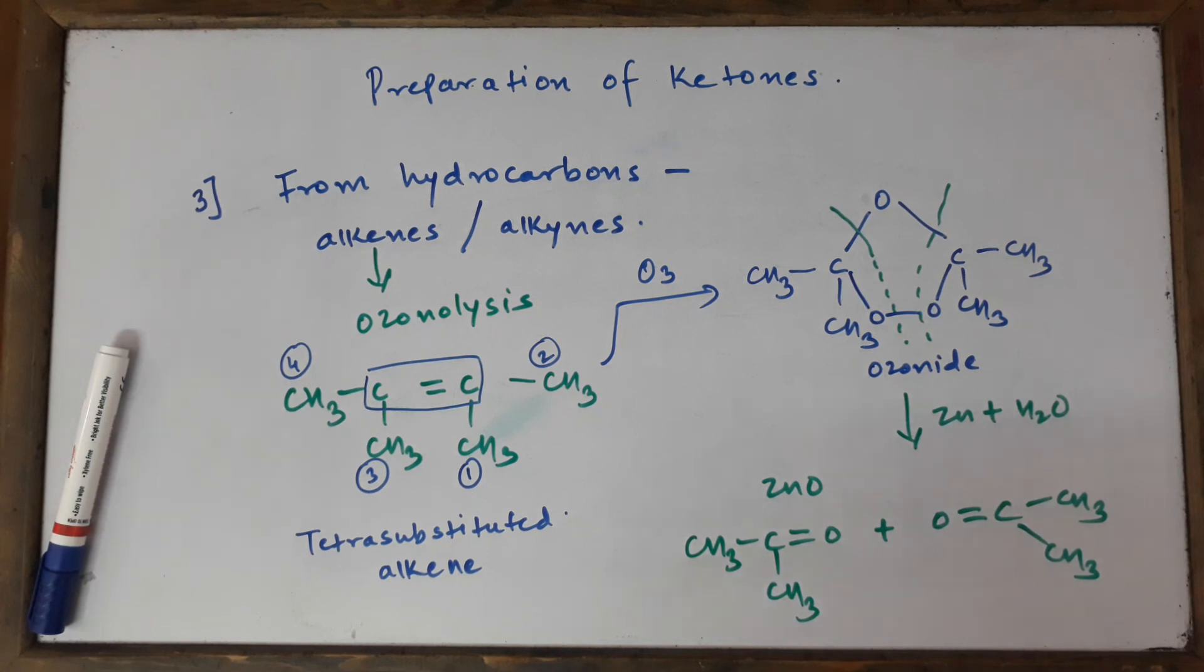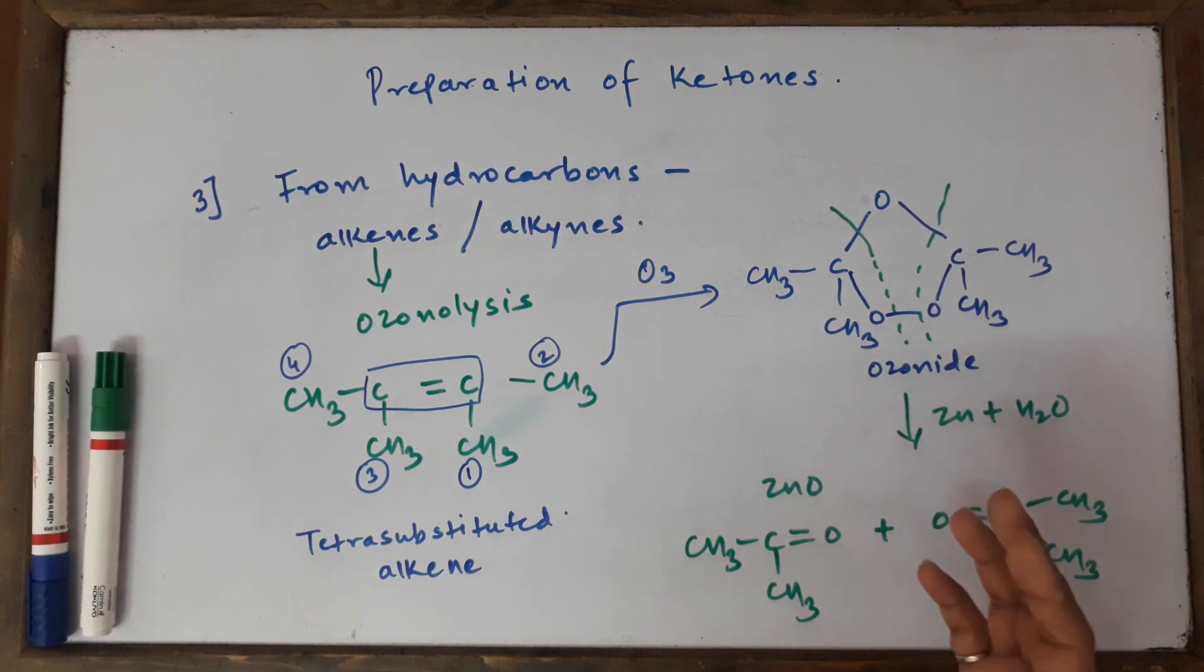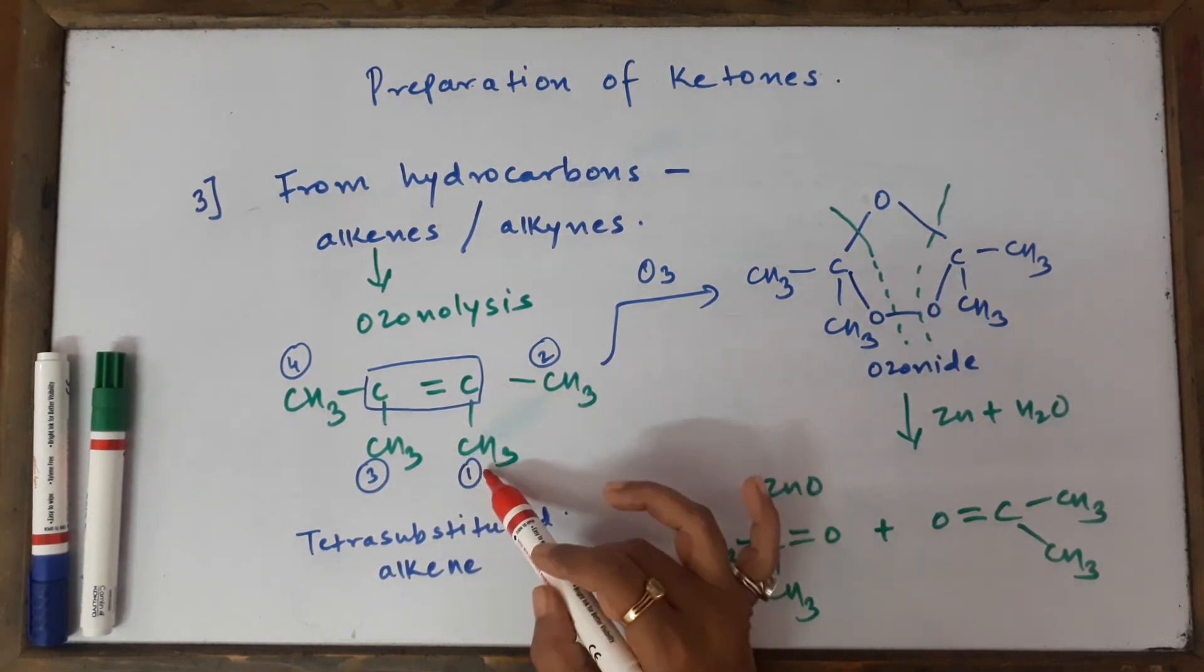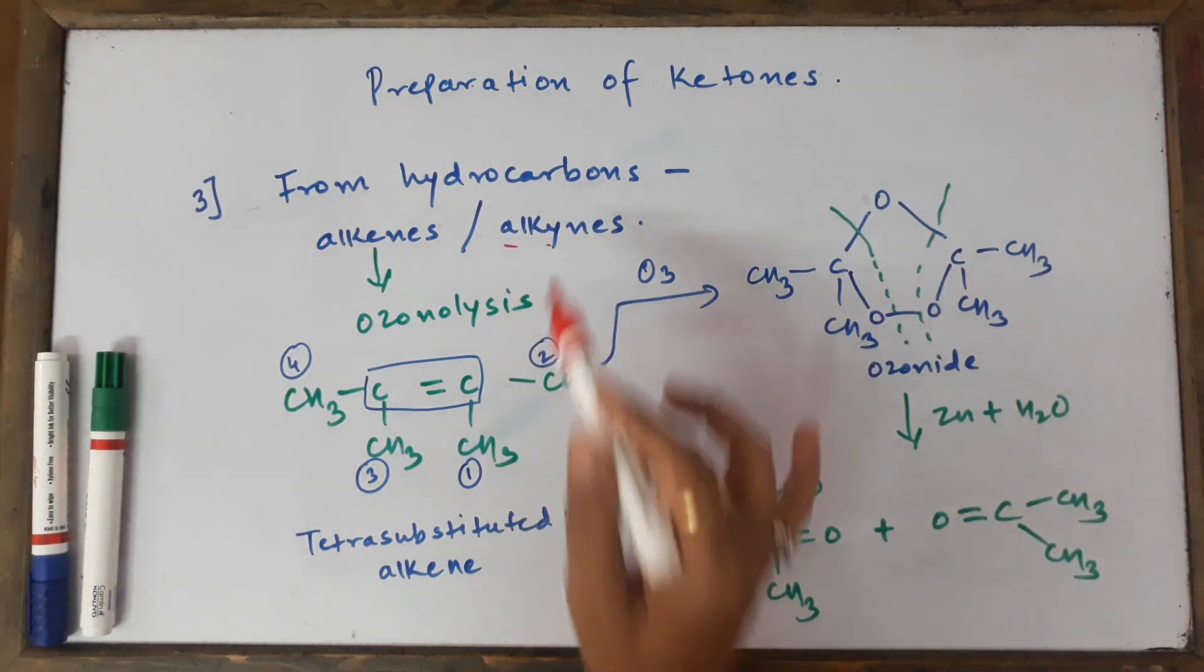This was not a very difficult method since we already did this in the previous video for aldehydes. We have understood that ozonolysis of alkenes can give you a variety of products—they can give you aldehydes or ketones, both depending upon the substituted alkene. Because here I have taken a tetra-substituted alkene, I've got ketones.